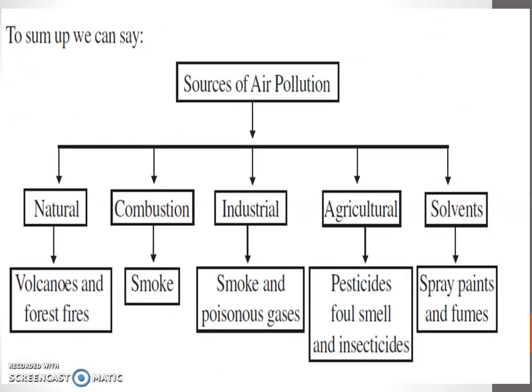To sum up, we can say the sources of air pollution are: natural — volcanoes and forest fires; combustion — smoke; industrial — smoke and poisonous gases; agriculture — pesticides, fertilizers, and insecticides; and solvents — spray paints and fumes.